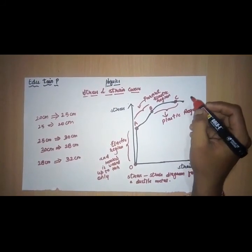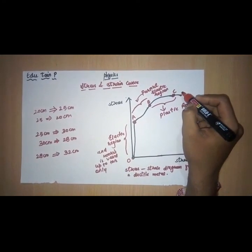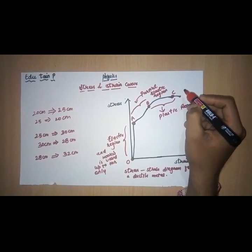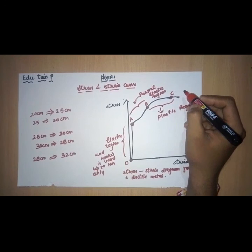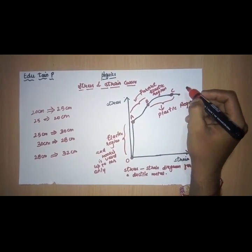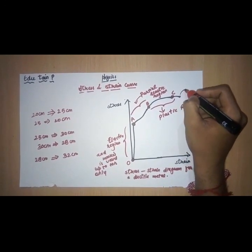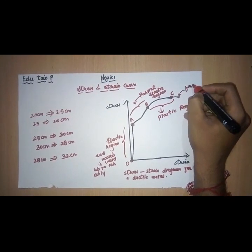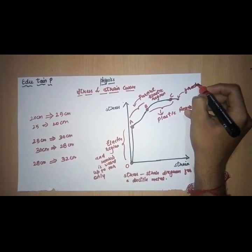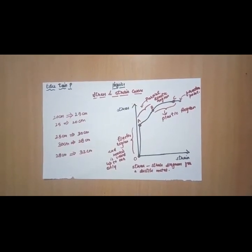If we apply a little force after the point C, that is the stress. If we apply a little stress, the wire breaks. And this point is known as fracture point. Okay? I hope that you understand the concept.